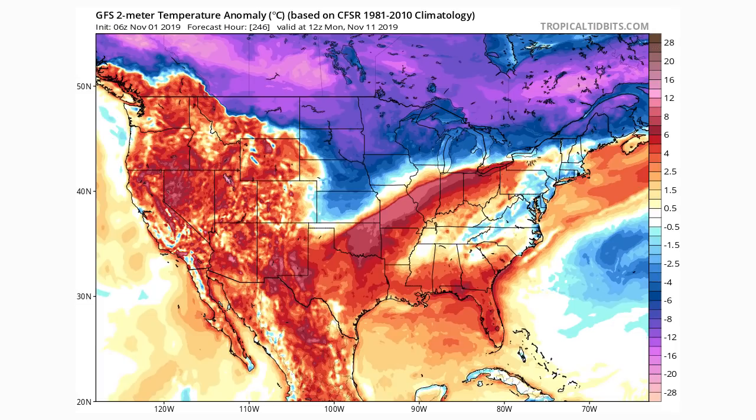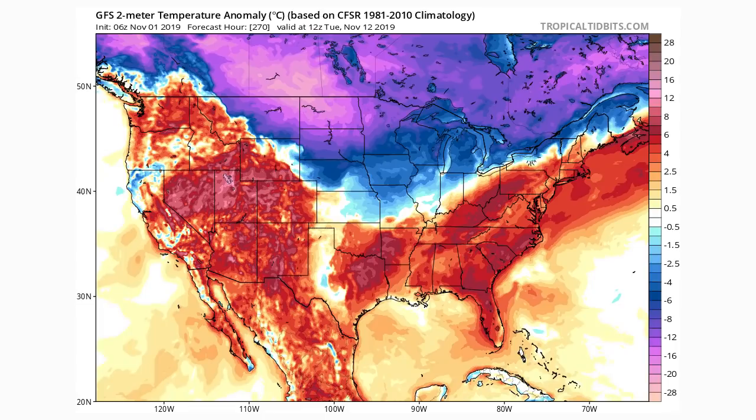That warmth is going to be pretty short-lived, because by the 12th we have very exciting stuff for the Midwest. We see pinks and purples — this is actually the coldest temperatures comparatively to normal on the entire model run. Up in North Dakota, Montana, and Canada we see very light pinks indicating around 28 degrees Celsius below average or more, which is just incredibly far below average. That would be very frigid temperatures if this occurs.